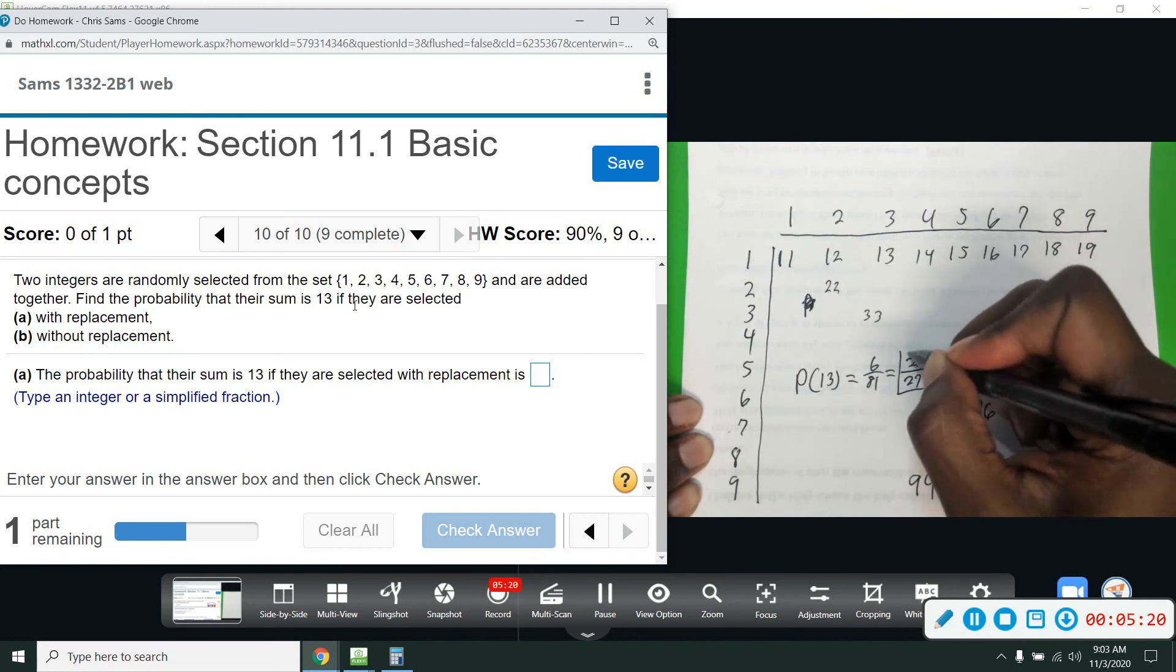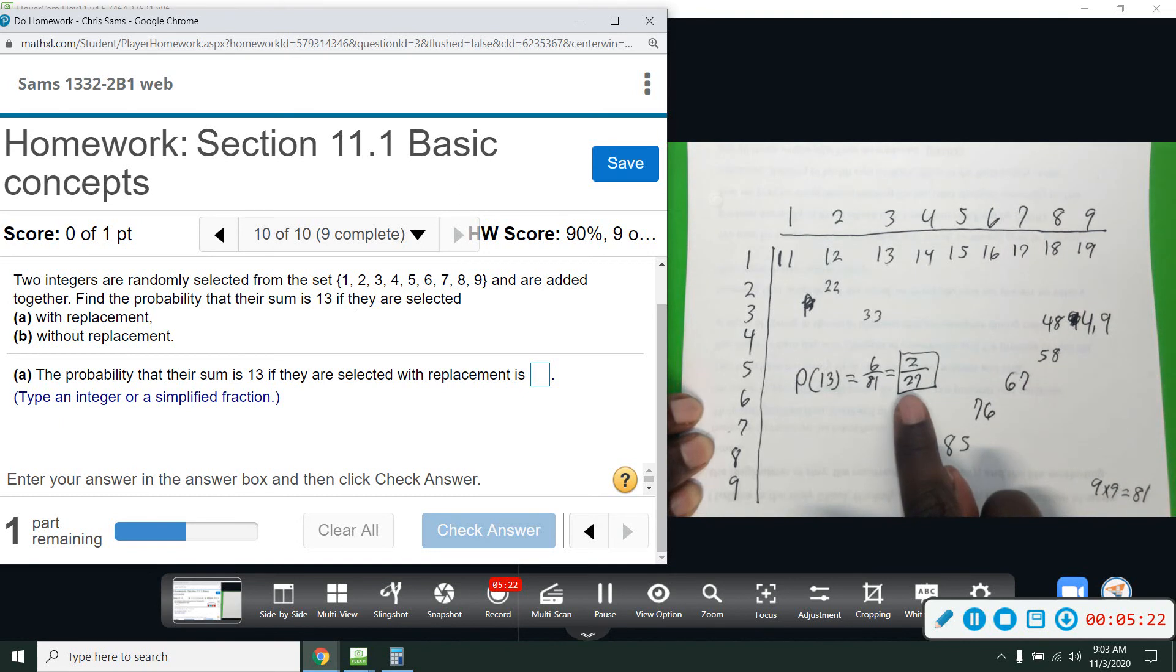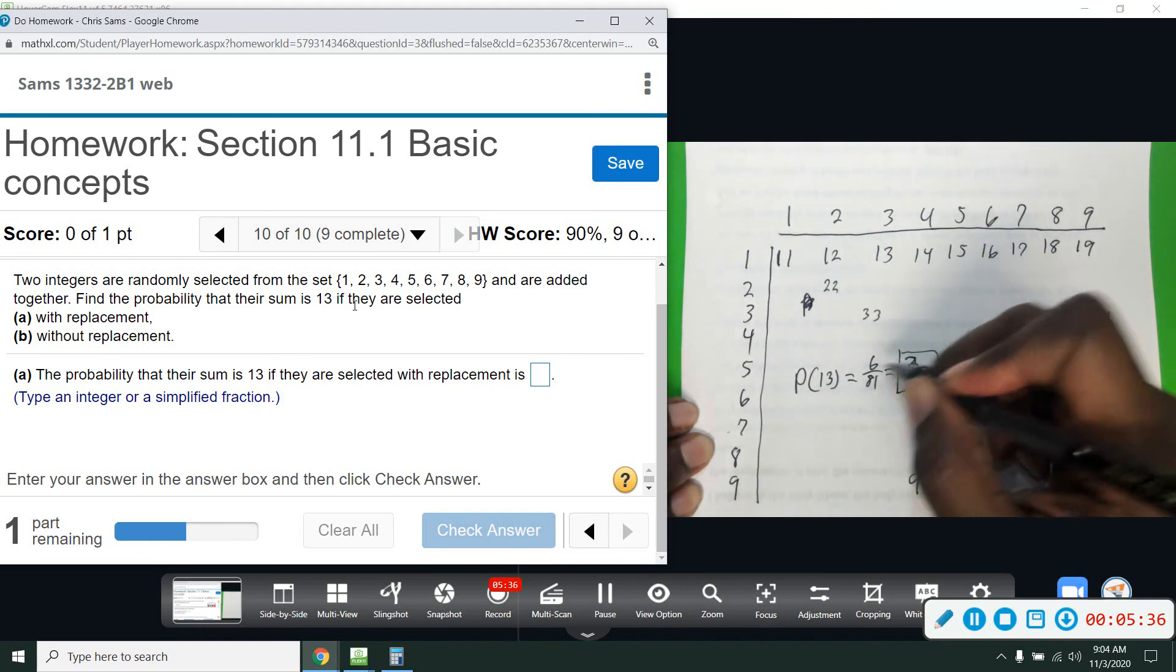So the probability of getting a 13 when you can use repeated numbers or with replacement, that's what that means. You take one, you put it back, and you can get the same number again. It would be two out of 27. Coming from six out of 81.